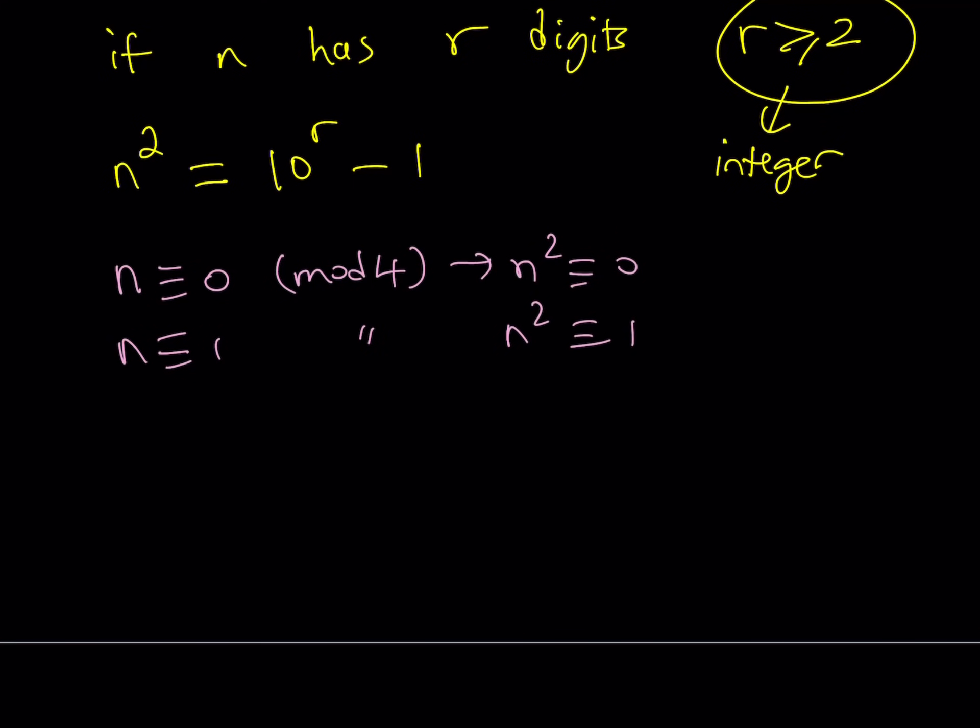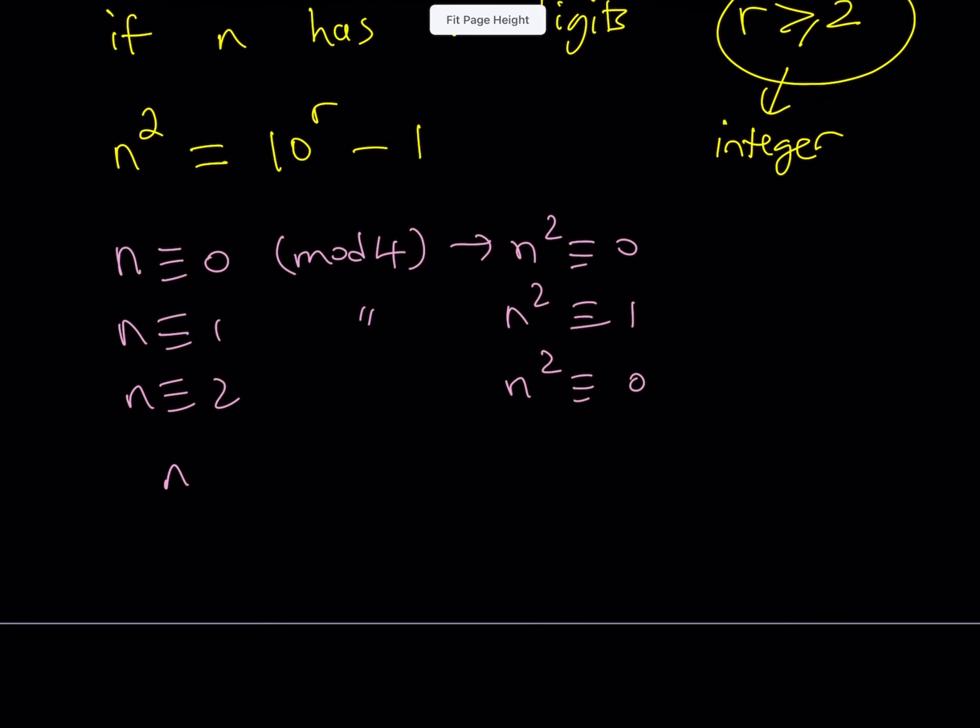If n is two mod four, then n squared is going to be four, which is zero mod four. And if n is equal to three mod four, then n squared is going to be nine, which is one mod four. So this kind of tells you that n squared has to be zero or one mod four all the time. This is kind of cool about mod four that you only get two results from any integer.